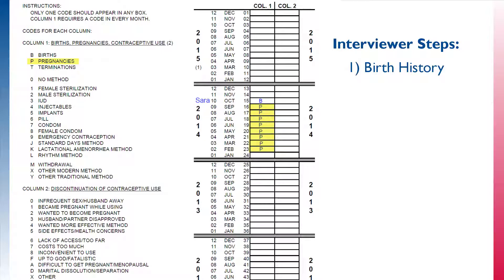Because the month of the birth is included as a month of pregnancy, there will be one less P than total months the respondent reported that she was pregnant. In our example, the respondent gave birth to a child named Sarah in October 2014. She reported being 9 months pregnant when Sarah was born, so there are 8 months with a P in column 1 that precede the month of birth. The interviewer will then ascertain if the respondent is currently pregnant. In this example, the respondent is not currently pregnant and the month of the interview is therefore left blank.